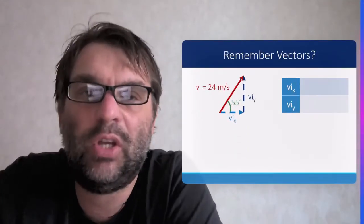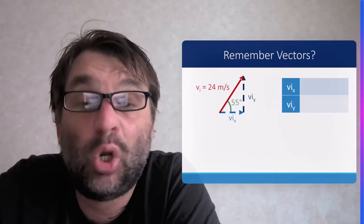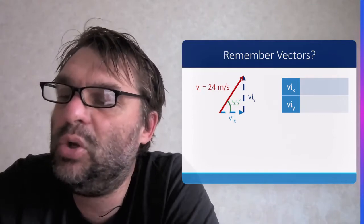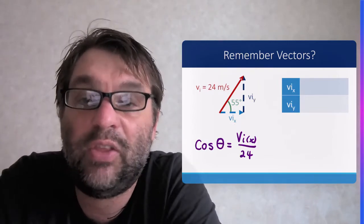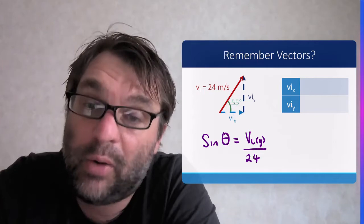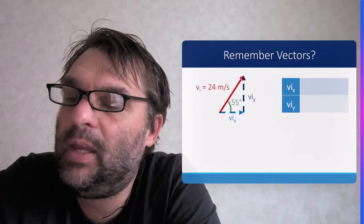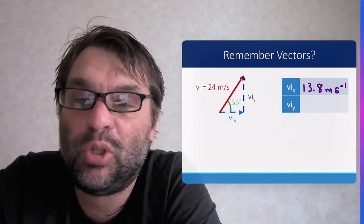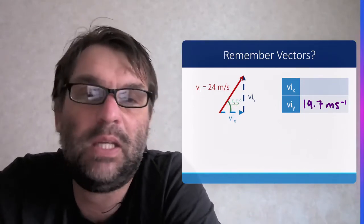Remembering vectors, if you are given the angle and the total initial velocity, you can work out the components of the initial velocity in the X and Y directions using SOHCAHTOA. So cos theta equals the initial velocity in X divided by the resultant (24 in this example), and sin theta gives the initial velocity in Y. Therefore, the initial velocity in X is 24 cos 55° = 13.8 m/s, and the initial velocity in Y is 24 sin 55° = 19.7 m/s.